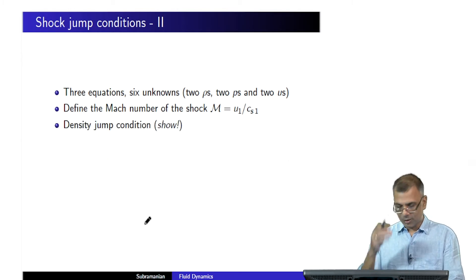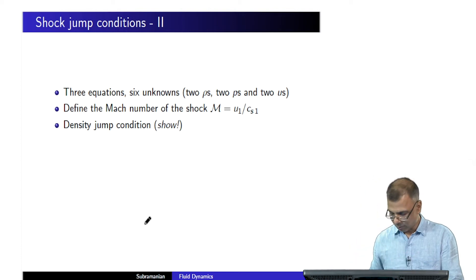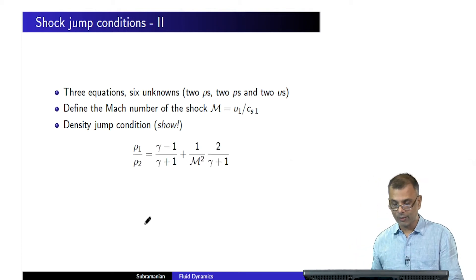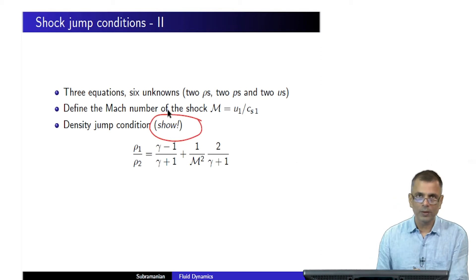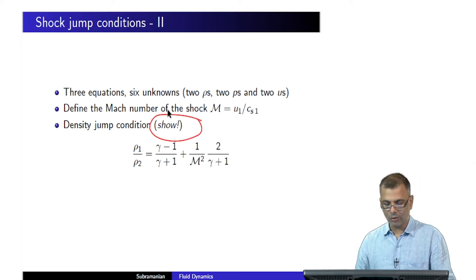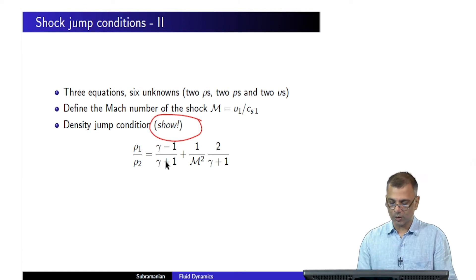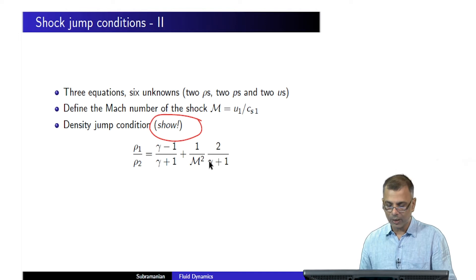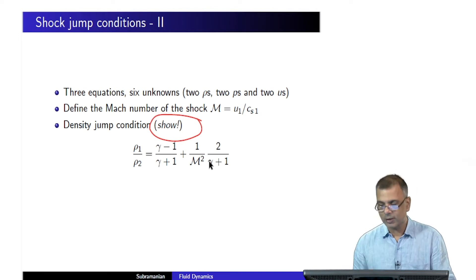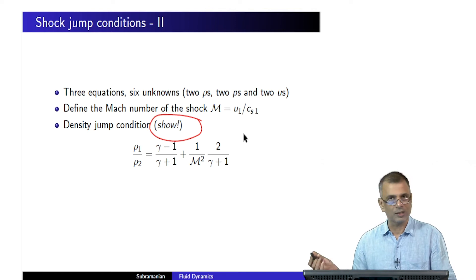Using this definition and those three conservation equations, we can show — and I strongly urge you to do the algebra — that rho1 over rho2 equals a specific expression. Gamma is just the adiabatic index, which can be five-thirds or one as the case might be; it is a constant as far as the fluid is concerned.